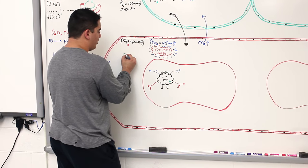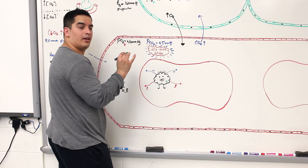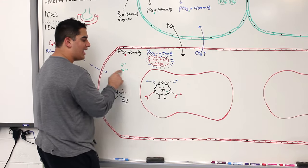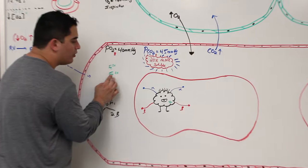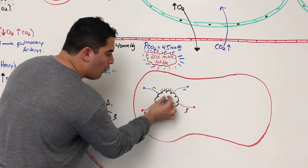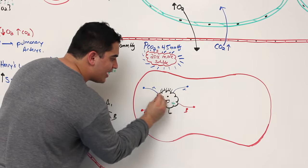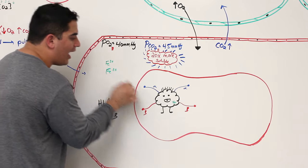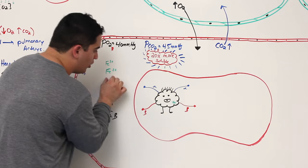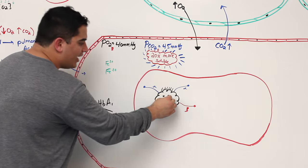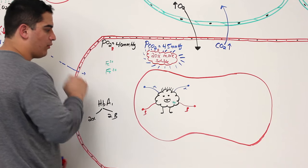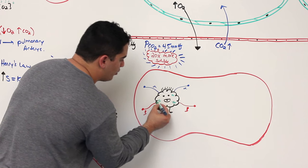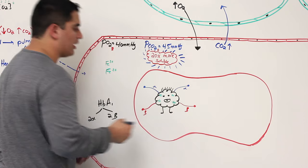Iron has two different states: the 3+ state (ferric) and the 2+ state (ferrous). The iron inside hemoglobin must be in the ferrous form — the 2+ state — not the ferric form. So whenever iron is added into the hemoglobin structure, it has to be in the two plus form, on each of the iron-containing heme groups.